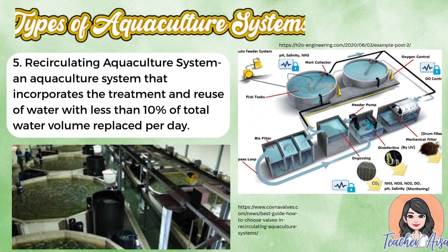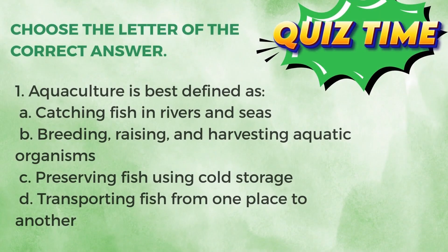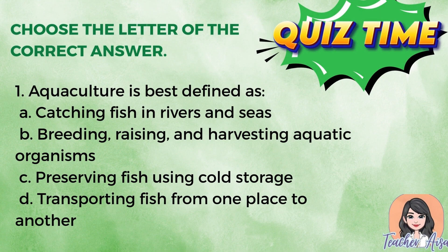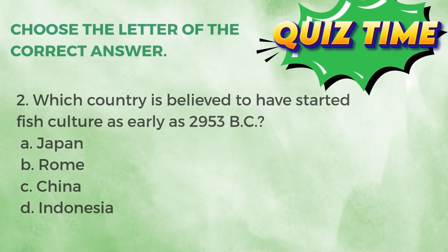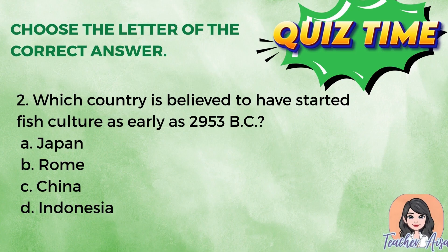Now let's check your understanding. Number one: Aquaculture is best defined as — A) catching fish in rivers and seas; B) the breeding, raising, and harvesting of aquatic organisms; C) preserving fish using cold storage; or D) transporting fish from one place to another. Number two: Which country is believed to have started fish culture as early as 2953 BC? A) Japan; B) Rome; C) China; D) Indonesia.